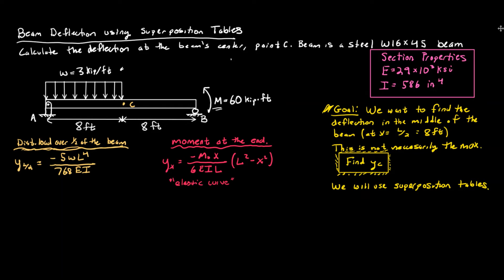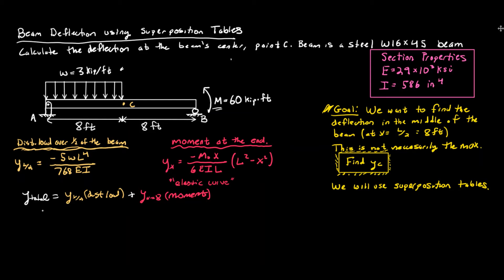The reason they call this superposition is because to find the total deflection, we just add up the contributions from each loading. So it's going to be the contribution from the distributed load plus the contribution from the moment. We're basically going to sum the contributions from each and find the total.